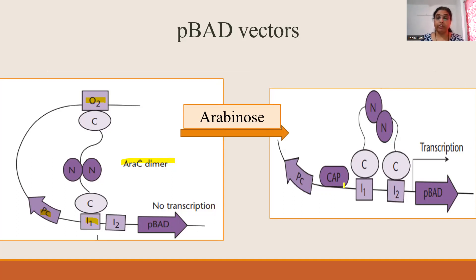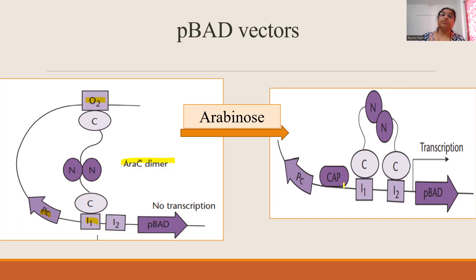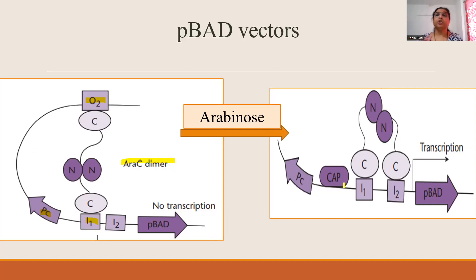When high-level expression is needed, completely remove glucose from the medium so cyclic AMP levels are very high. Then both activators — cyclic AMP-CRP complex and AraC — are active and bind to the activator binding site, giving high-level expression. In this way, you control high and low levels of expression. When you don't want any expression, add glucose to the medium and completely remove arabinose — this switches off and represses the gene.